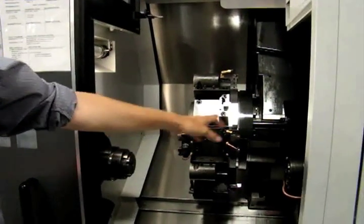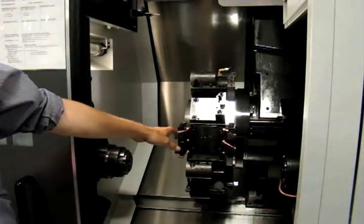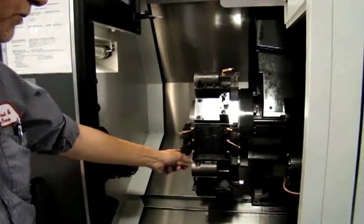The NL2000 lathe at Linda Tool has 64 tool offsets available in this control, and at this point, every single one of them is occupied, according to Holmes.